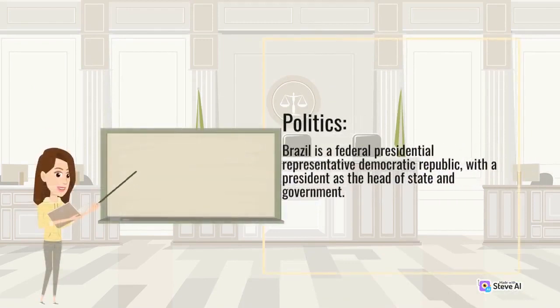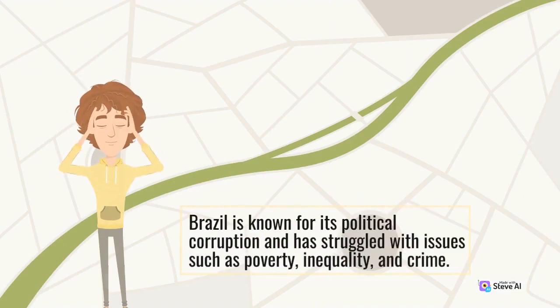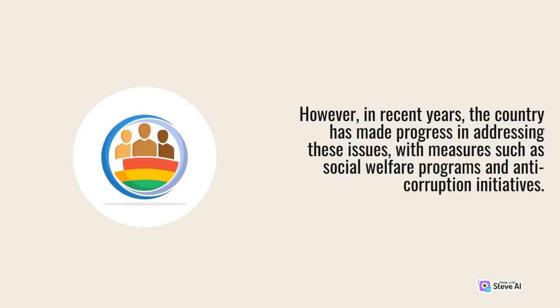Brazil is a federal presidential representative democratic republic, with a president as the head of state and government. The country has a multi-party system, with political parties representing a range of ideological positions. Brazil is known for its political corruption and has struggled with issues such as poverty, inequality, and crime. However, in recent years, the country has made progress in addressing these issues, with measures such as social welfare programs and anti-corruption initiatives.